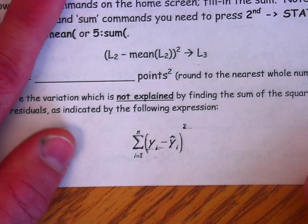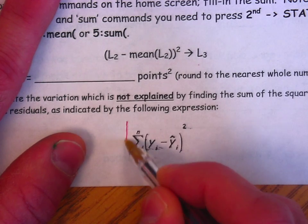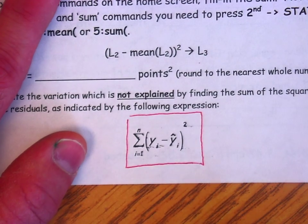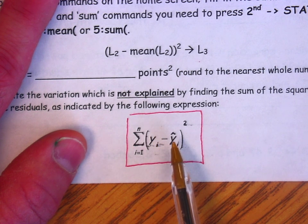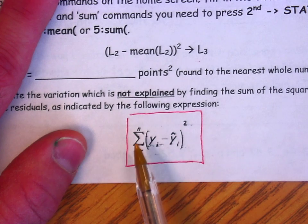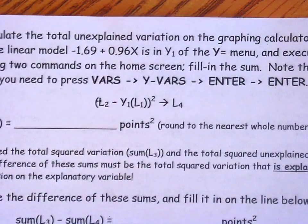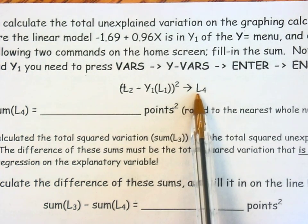Now, the next thing that we're going to calculate is the amount of that variation that is not explained. That is represented by squaring the residuals. So notice this is the residual, the actual value take away the predicted value, and we're going to square that and add all of this up. This is the amount of variability that is not explained in the model, and that can be represented with this command on the home screen.